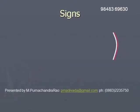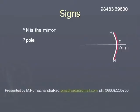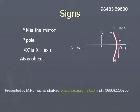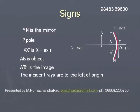Let us explain the sign convention using a figure. In the figure, MN is a concave mirror, P is its pole, and XX' is the principal axis. AB is the object — it is upright and along the positive direction of the y-axis. A'B' is the image, which is downward. The object distance is negative because the object is situated to the left of the origin.